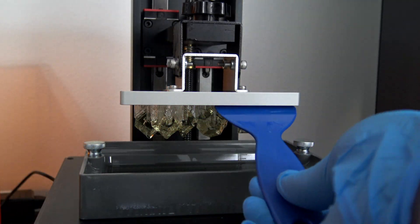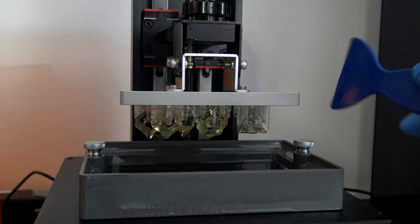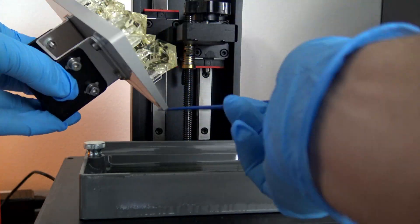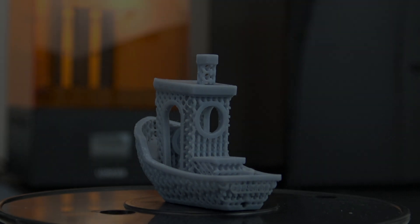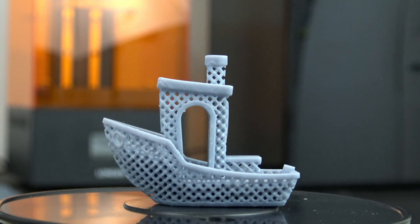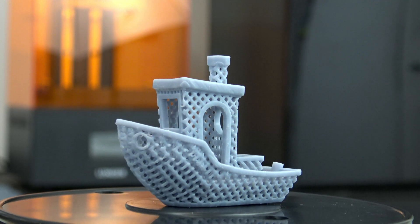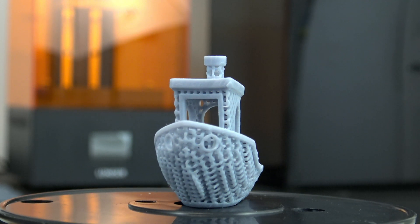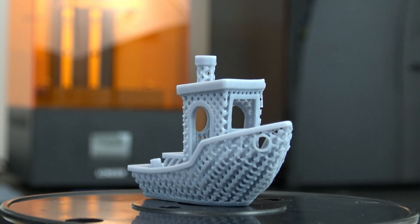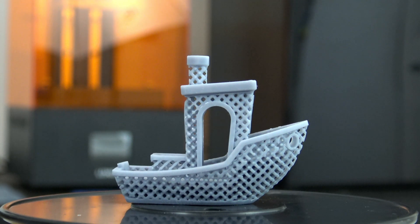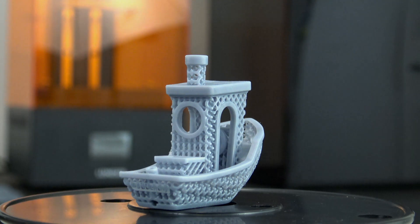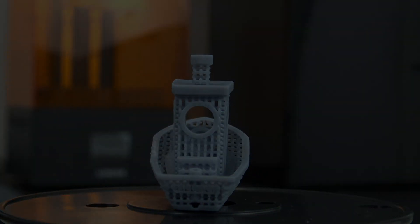Resin printing is substantially more work than filament 3D printing, but if the high detail is worth the extra effort for you, the Longer Orange 4K makes resin printing as easy as possible. So thank you all for watching my review of the Longer Orange 4K, and thank you Longer for providing a review printer for me to try out. You can find more information in the links in the description, and if you decide to purchase one using the affiliate links below, you'll help support this channel. If you have any questions about the Longer Orange 4K, or any suggestions for topics I should cover next, please leave them in the comments below. And thank you all for watching, I'll see you all next time!